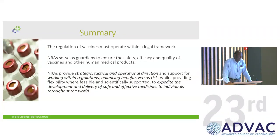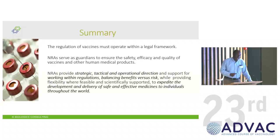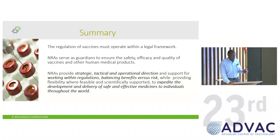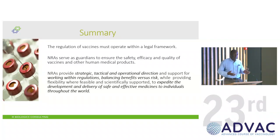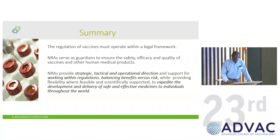In summary: the regulation of vaccines must operate within a legal framework. The NRA serves as the guardian — the protector of individuals for safety, efficacy, and quality of vaccines and other human medical products. The NRA needs to provide strategic, tactical, and operational direction, done within the regulations while balancing benefits and risks and providing flexibility. Science changes, so you can't be very narrow. The role is not just compliance and enforcement, but also to expedite the development and delivery of safe and effective products to individuals throughout the world.